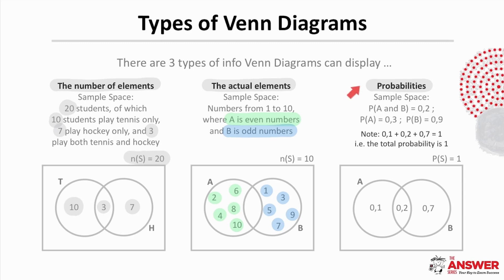Lastly let's have a look at when the information is displayed as probabilities. For this example here you are given that the probability of A and B which is the overlap is 0.2, the probability of A is 0.3 and the probability of B is 0.9.